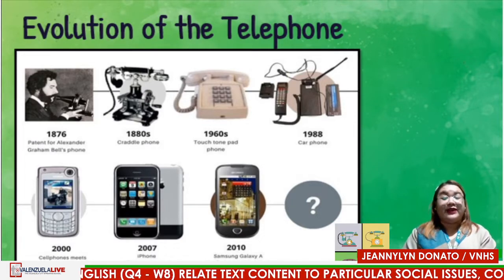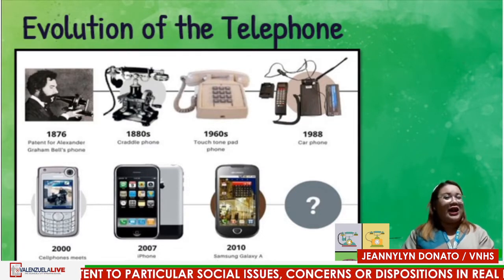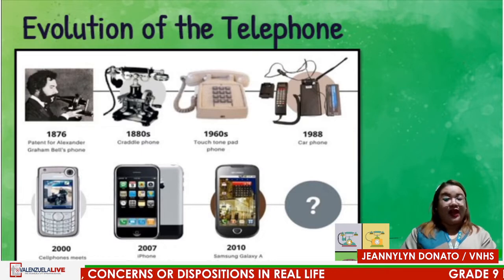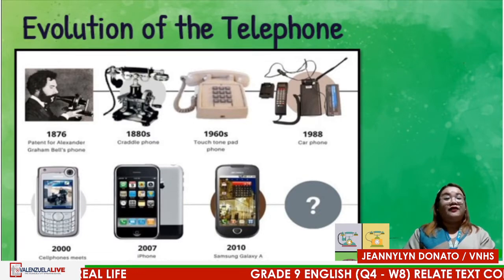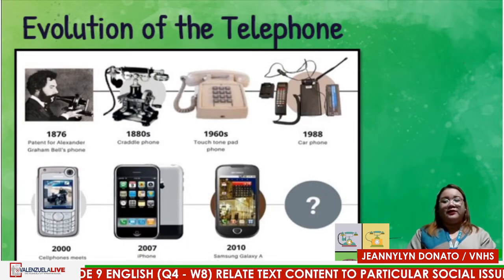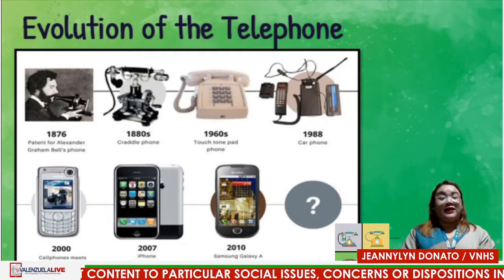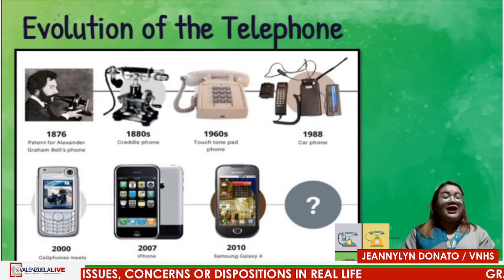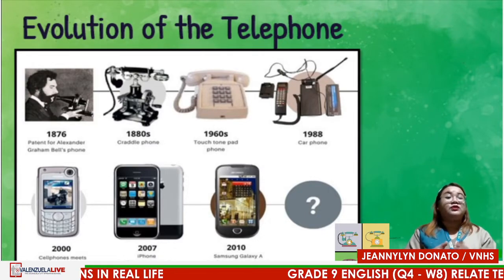In the 1880s, the cradle phone was invented. In the 1960s, your lolos and lolas and your parents used this kind of telephone — the touch-tone pad phone. In 1988, car phones were invented. In the year 2000, cell phones met the internet, where we used cell phones for browsing through data or Wi-Fi. In 2007, the first generation of Apple phone was released. And in 2010, Samsung released its first Android phone. And up to now, the evolution of cell phones continues.